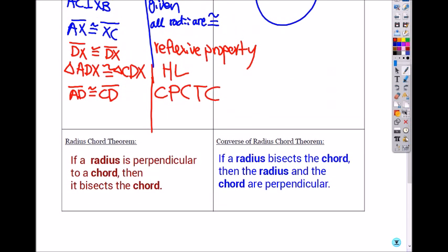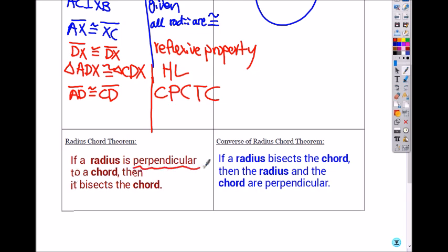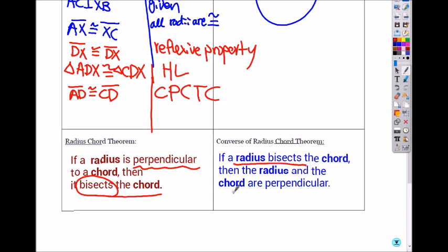So let's write the theorem down. The radius-cord theorem says, if a radius is perpendicular to a cord, that was given, right, then it bisects the cord. What's the converse theorem? Converse means you switch if and then. So the converse of radius-cord theorem is the other way around. Here, if it's perpendicular, then it's bisecting. The converse means you switch if and then. So it says, if the radius bisects, then the cords are perpendicular to the radius.